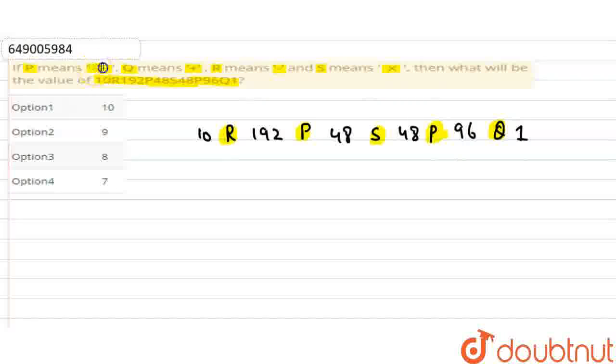P is where we put division, and so on. R means 10R means subtraction, so 10 minus 192 divided by 48. S means multiplication, so multiply by 48. P means division, divided by 96. Q means addition, plus 1.